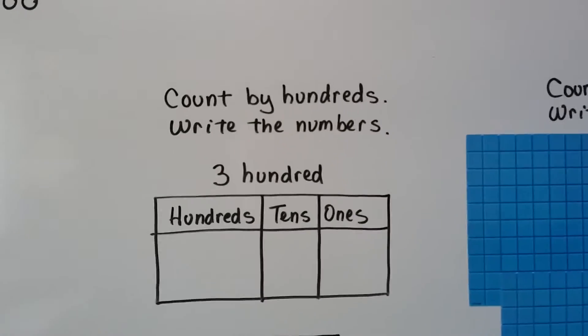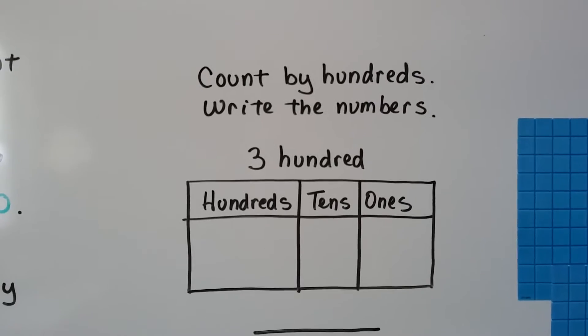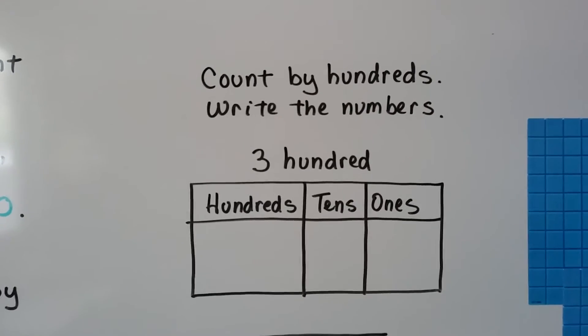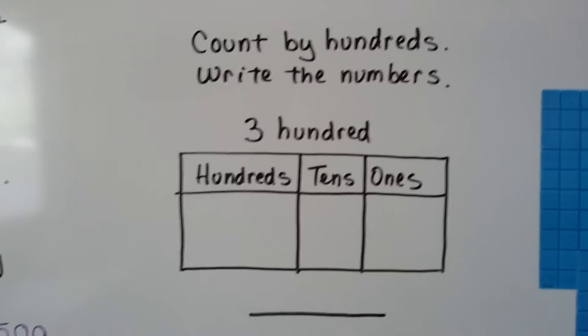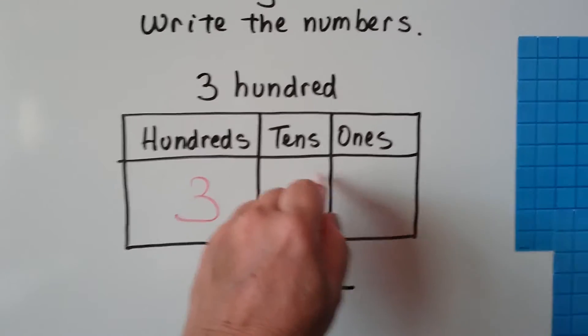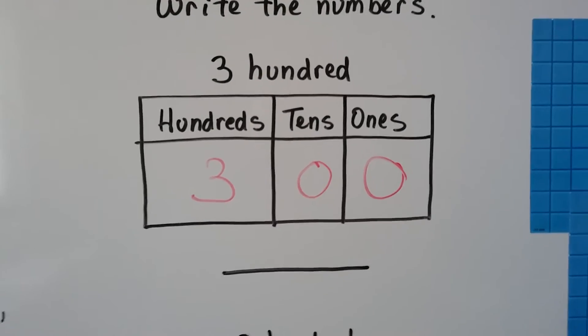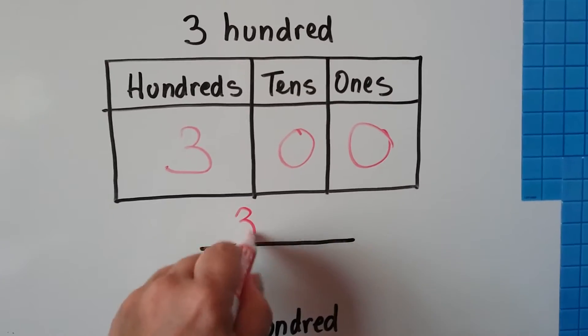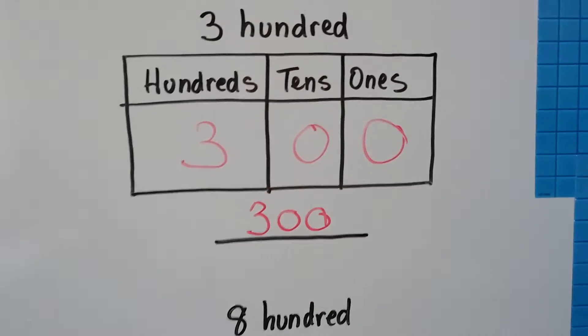So we can count by hundreds and write the numbers. 100, 200, 300. 300 would be 3 in the hundreds place, 0 tens and 0 ones. We'd write it as 3, 0, 0, 300.